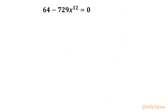Welcome back to Infigyan friends. In this video we are going to take up one very interesting and challenging question from algebra. The equation is 64 minus 729 x power 12 equal to 0. We have to find out all 12 solutions of the equation.